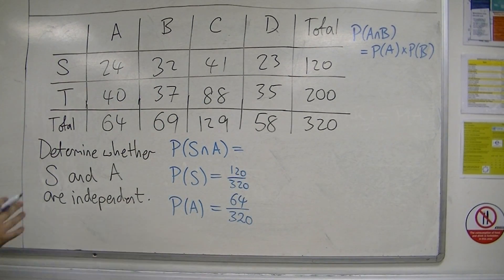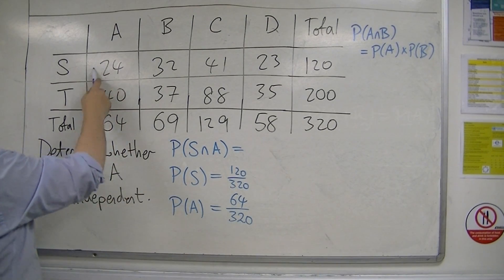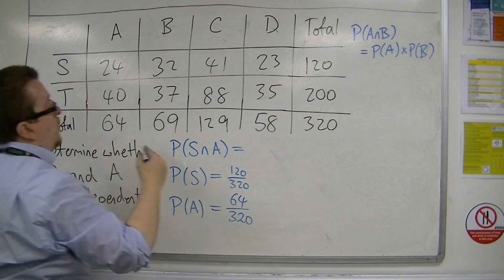Now the probability of S intersection A is this one here, 24 out of 320.